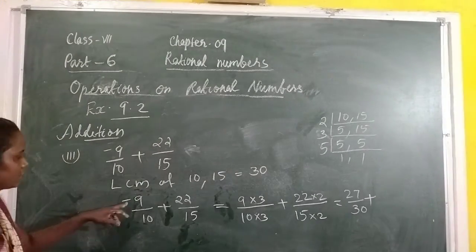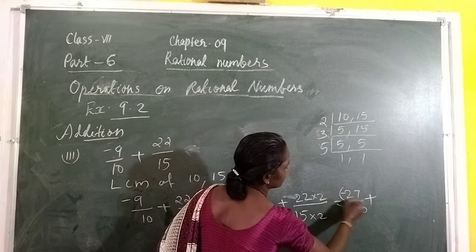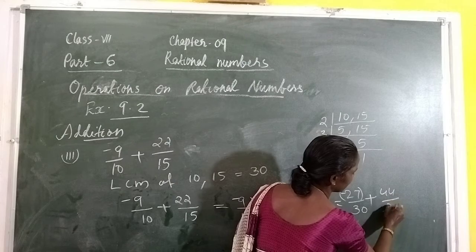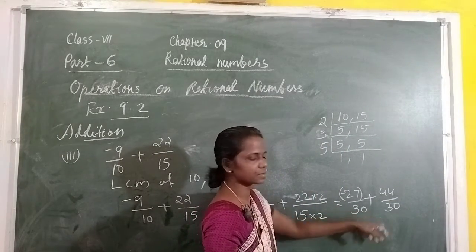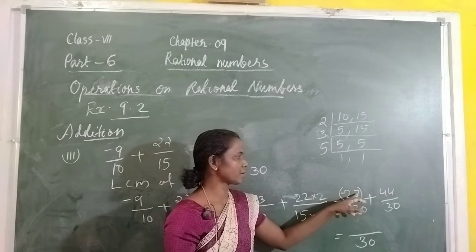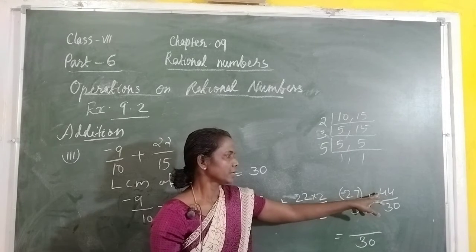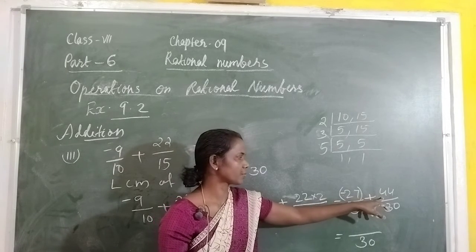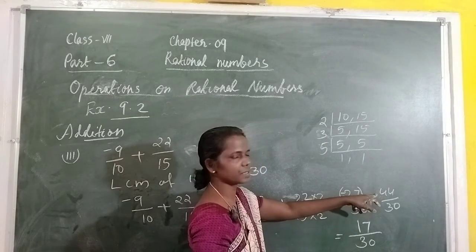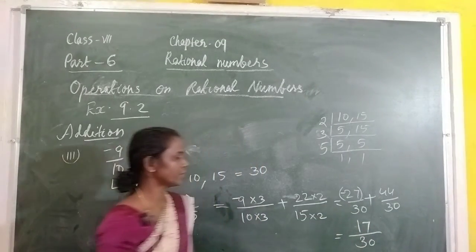Now the denominators are same, so we write that same denominator and add the numerators: negative 27 plus 44. One is negative and the other is positive, so we find the difference: 44 minus 27. The biggest number is 44, which has a positive sign. So the answer is positive 17 by 30.